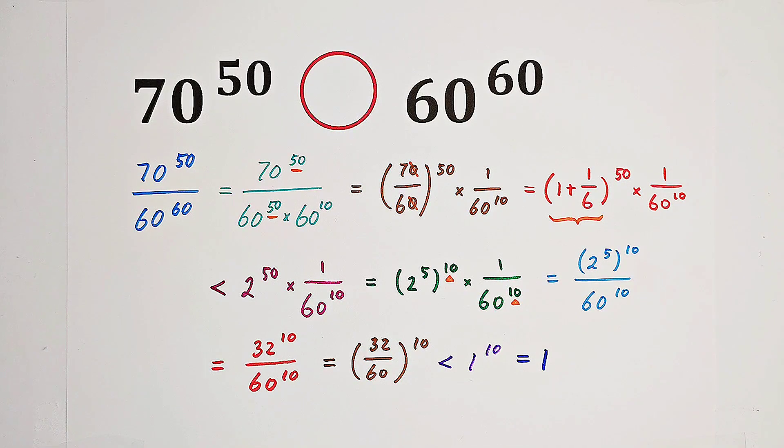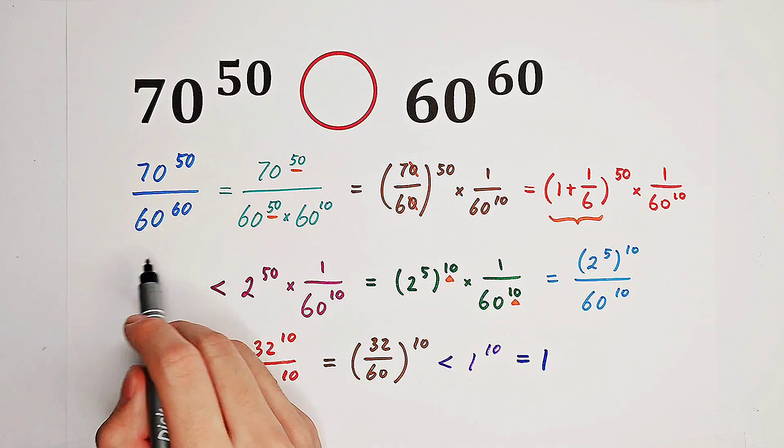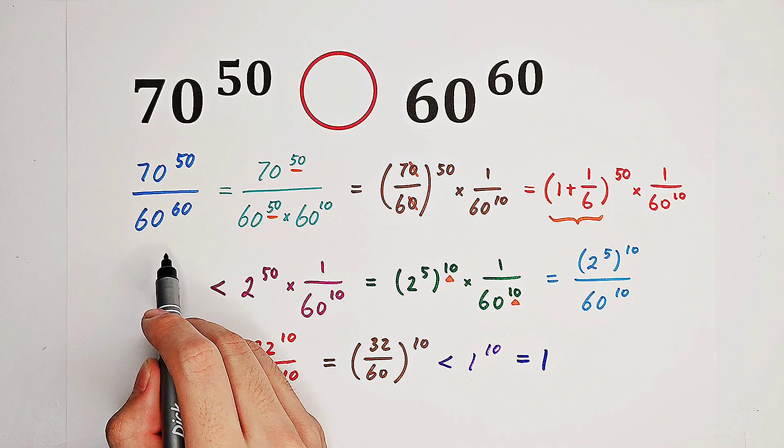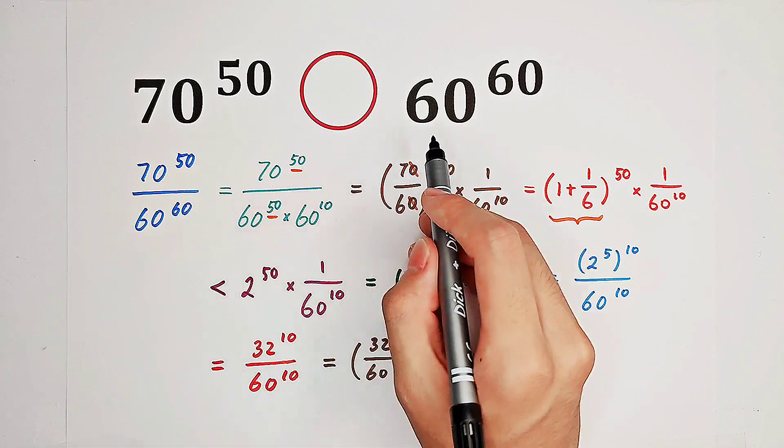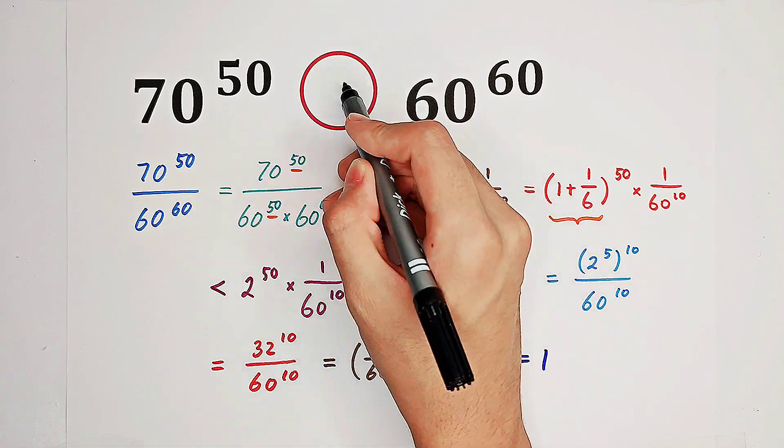So what does it mean? The quotient of our both sides is less than 1. So our denominator is greater. It implies that 60 to the power of 60 is greater.